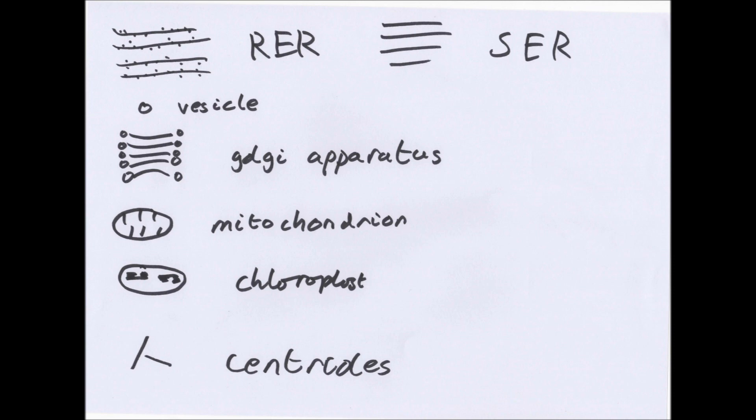You have a vesicle. This is a small fluid filled sac. This will transport substances in and out of the cell. It will fuse to the cell membrane and then will allow substances in or out. As we'll look at later, it's a way of transporting hormones and other proteins made.